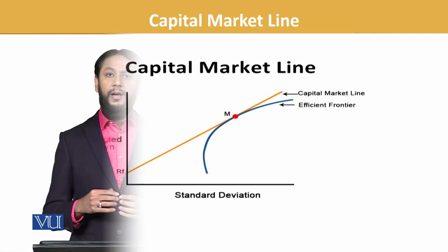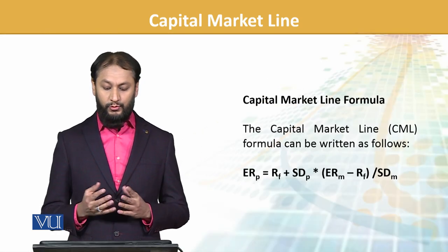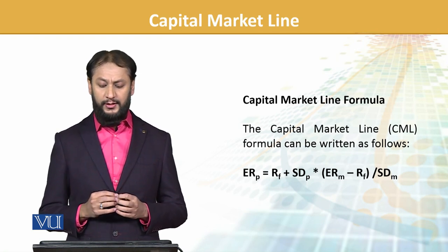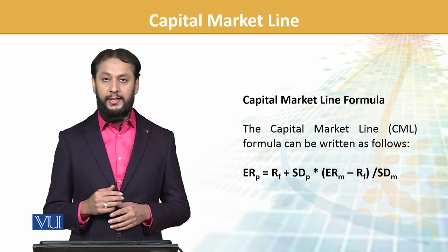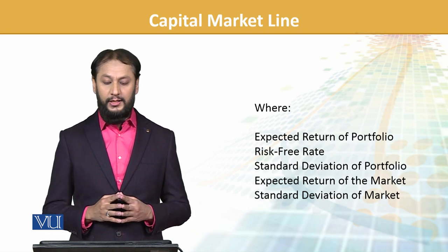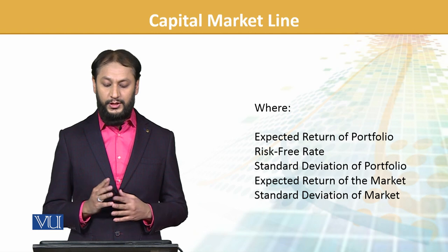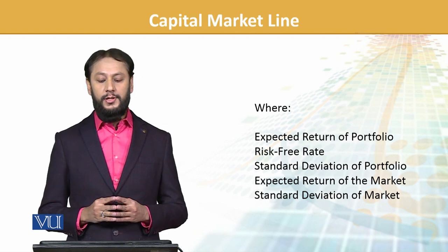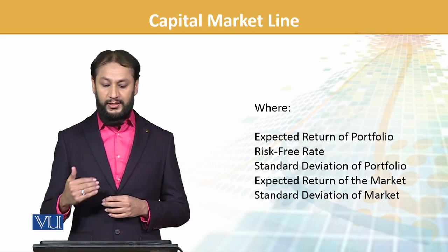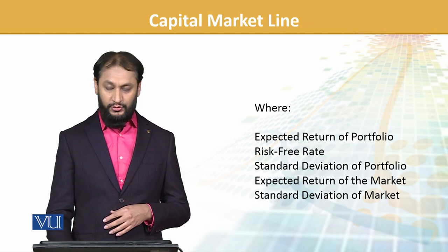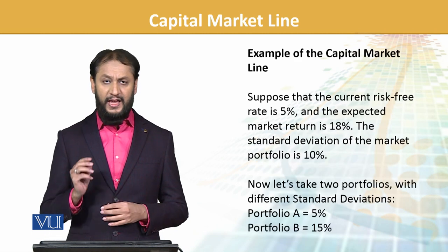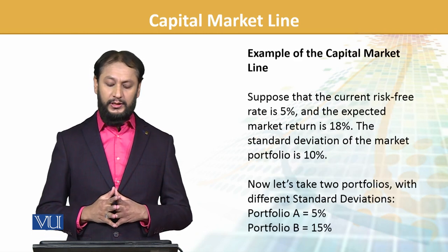What is the formula of the capital market line and how is it calculated? Our aim is to get the expected return. We use the risk-free rate and standard deviation. The formula uses: expected return of the portfolio equals the risk-free rate, plus the ratio of (expected market return minus risk-free rate) divided by the standard deviation of the market, multiplied by the standard deviation of the portfolio. Let's take an example so it is more completely understood.